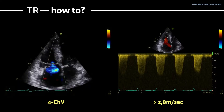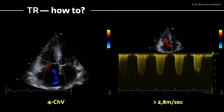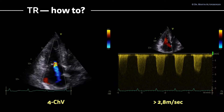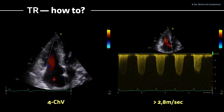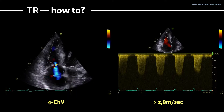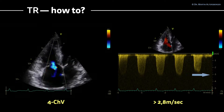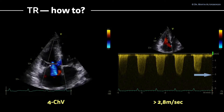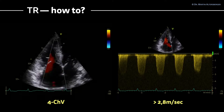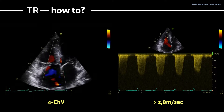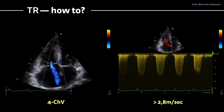Now we have to see how to measure tricuspid regurgitation. For the four-chamber view, we use color Doppler to guide the placement, then measure the peak signal of the tricuspid regurgitation with continuous wave Doppler. This is approximately 3.1 meters per second — definitely above 2.8 m/s, which favors an elevation in pulmonary arterial pressure and is a positive marker for diastolic dysfunction.